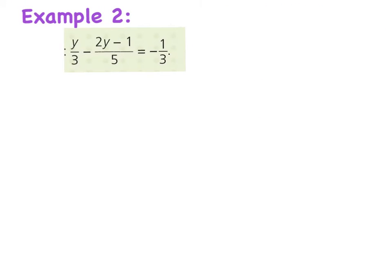Now looking at example two: we have y divided by 3, minus (2y − 1) divided by 5, equals minus 1 divided by 3. We're going to focus on the fraction part first — y over 3 minus (2y − 1) over 5 — and find a common denominator.